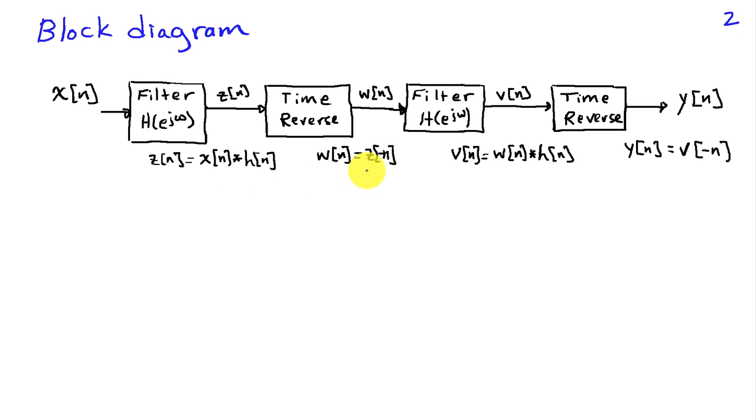Then we implement time reversal, so we define w to be z[-n]. We put this time reverse signal back through the same filter to get v[n], which is now the convolution of w[n] with h[n], and then we time reverse to get the final output. So we have y[n] equals v[-n]. And one question that we want to address is what's the overall filter function that's implemented by this sequence of steps.